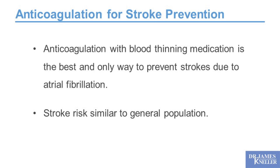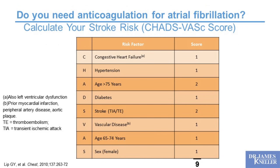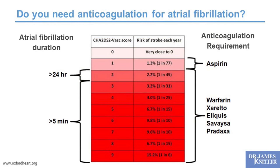Do you need blood thinners? We decide using a risk scoring system based on your medical history. Patients receive points for congestive heart failure, high blood pressure, two points for age above 75, diabetes, two for prior stroke, vascular disease, age above 65, and female gender — a maximum score of nine. From that score we estimate the annual stroke risk without blood thinners, and decide whether aspirin or a stronger blood thinner is appropriate. Now we have excellent options: Xarelto, Eliquis, Savaysa, Pradaxa.